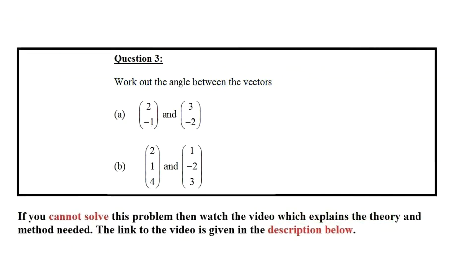Hi there, in this video I'm going to do a revision question on vectors. Let's take a look at question number 3: work out the angle between the vectors. In part A we have the column vector (2, -1) and another column vector (3, -2).